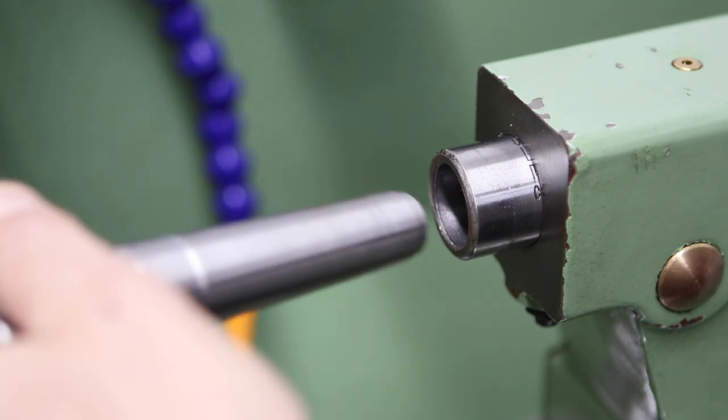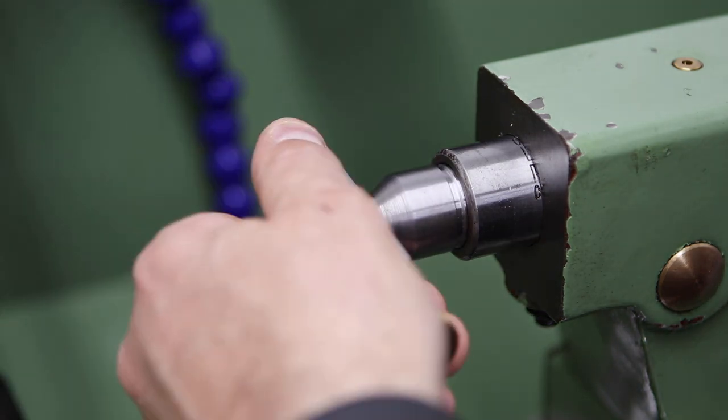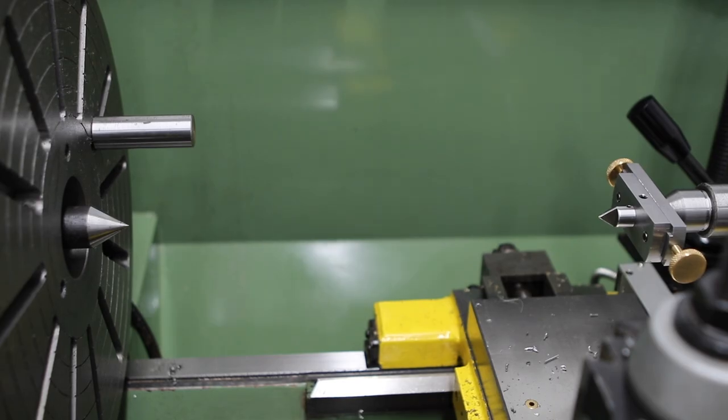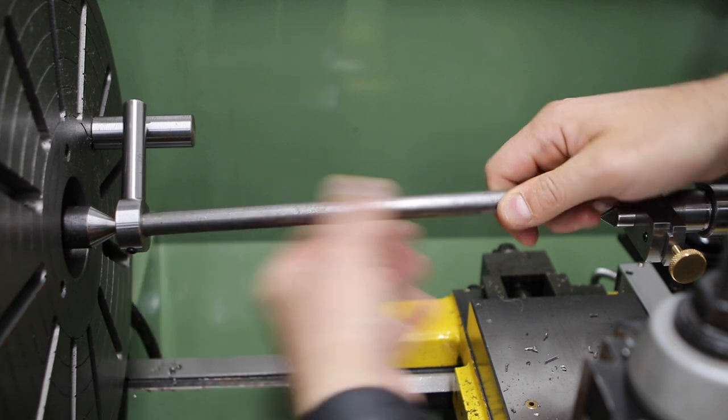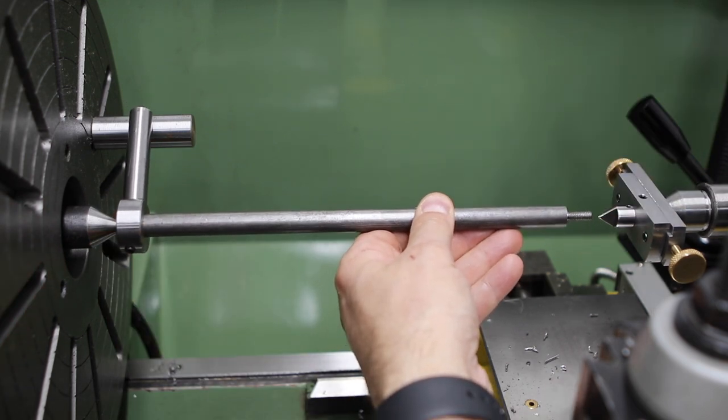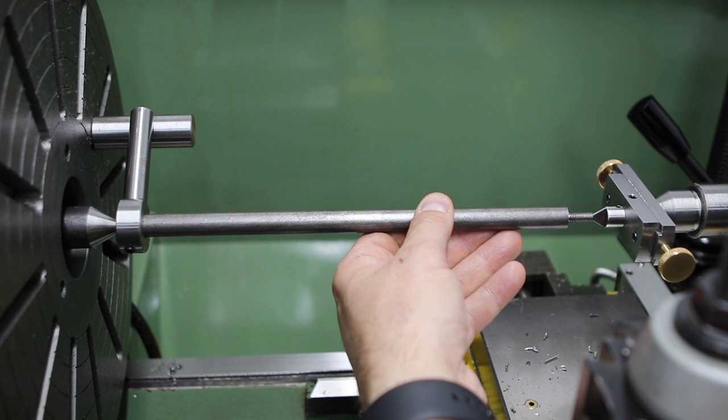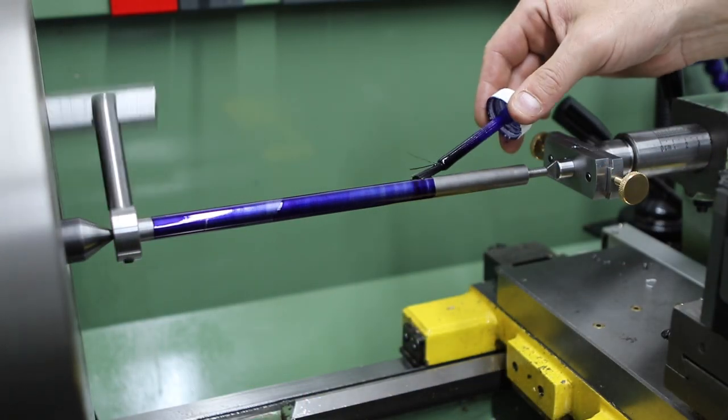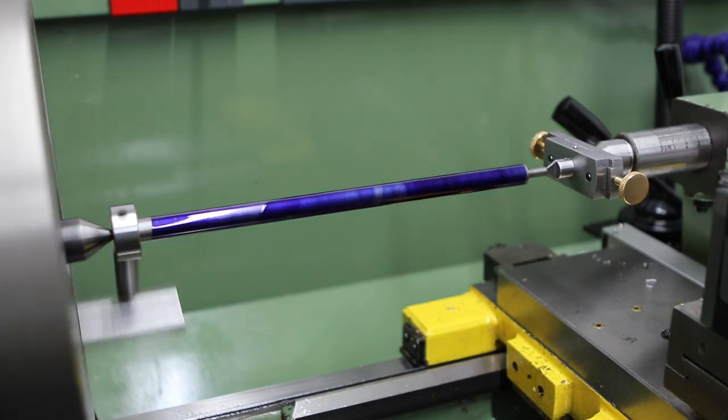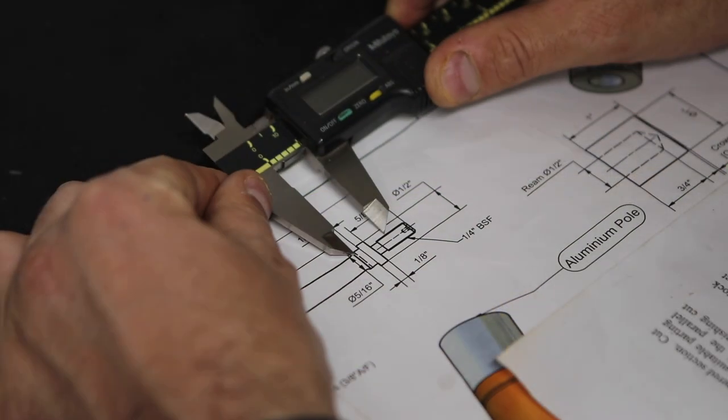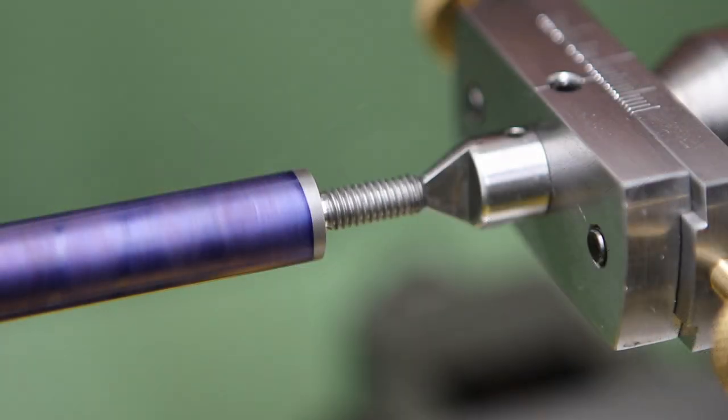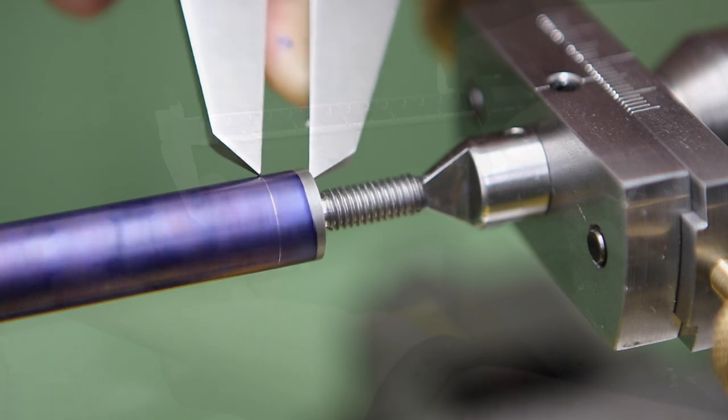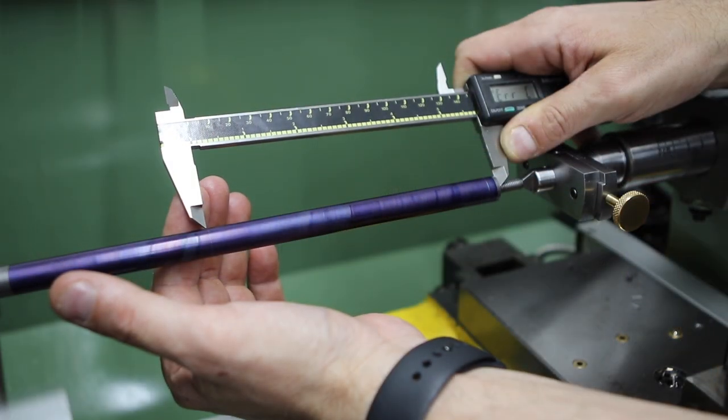To turn this taper I'm going to be using my set-over center tool I made in a previous video. What this allows you to do is offset the work for taper turning without having to disturb the tailstock setting, which is quite useful. If you're interested in seeing that build, I'll put a link in the description. I need to mark out some of the features on the shaft: the start and end of the taper, as well as the start of the features for the handle. I'm taking these dimensions from the drawing and using an old set of calipers that are broken. Don't use your good calipers for this.